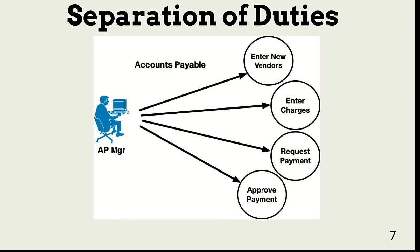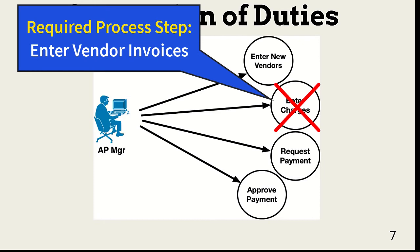Separation of duties can take two forms when using keys. In the first, the person with access to the key does not also have access to the data. A second form can be used alone or with the first: it's the prevention of any one person from performing all required tasks for a business function. In this example, we prohibit the AP manager from approving vendor invoices.